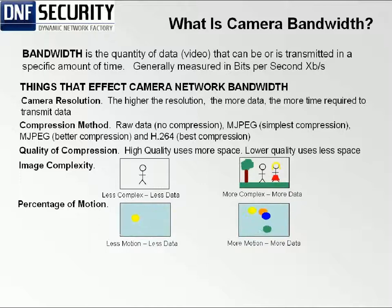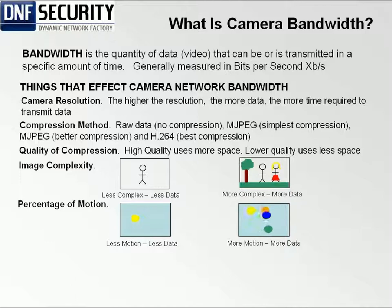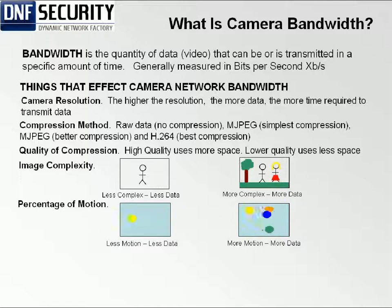Percent of motion. With MJPEG compression this is not a factor, because it's essentially taking a picture — a static image per field and compressing it. But with MPEG and H.264, both of which are motion-based in a video sense rather than a picture sense, the higher the amount of motion within the field of view, the more data is transmitted. Simple back-and-forth motion means less data; more complex motion within the field of view means much more data is being transmitted.